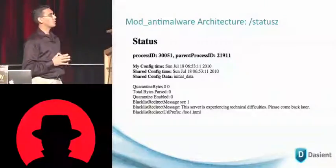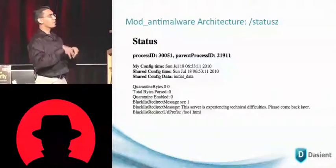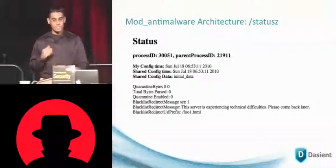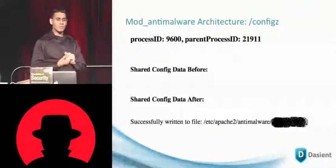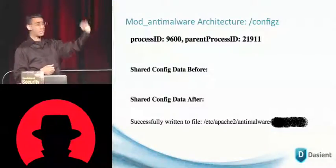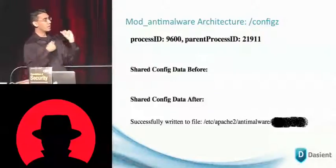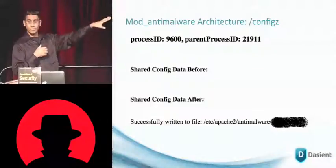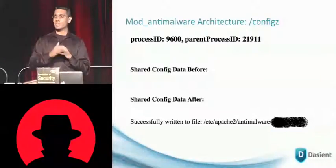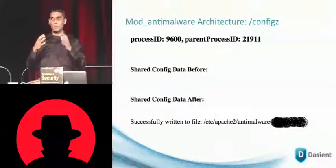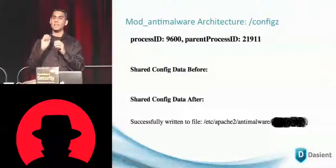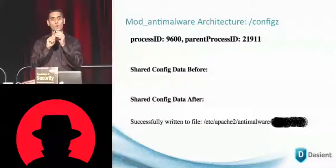That's an example of what comes back in status_z. In this particular case, redirection for the foo1.html page is enabled and the technical difficulties message is being shown. The next call is config_z. Once called with new configuration directives, it will output the configuration data before and after the change, and give the caller a message indicating whether or not the new directives were actually written to the file. There are two updates when config_z occurs: first, the web server process that receives the request updates the directives in memory — which is shared across web server processes — and it also writes those directives to disk.